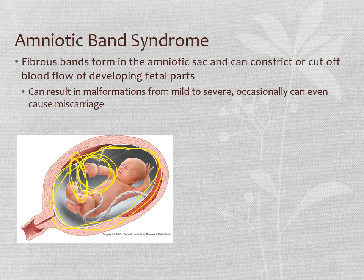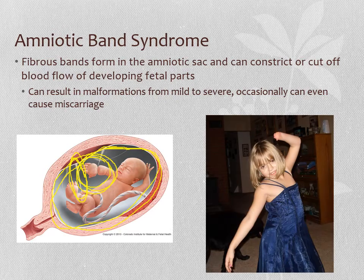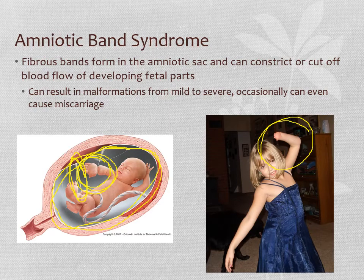These amniotic bands can cut off blood supply to the developing part of the body. The result can range from very mild — like missing part of a pinky finger — to more severe, such as missing most of the hand with only small stubs of fingers. In rare cases, the band can wrap around the baby's neck and cause fetal death. Most commonly, if someone has an arm or hand like this, it's usually due to amniotic band syndrome.